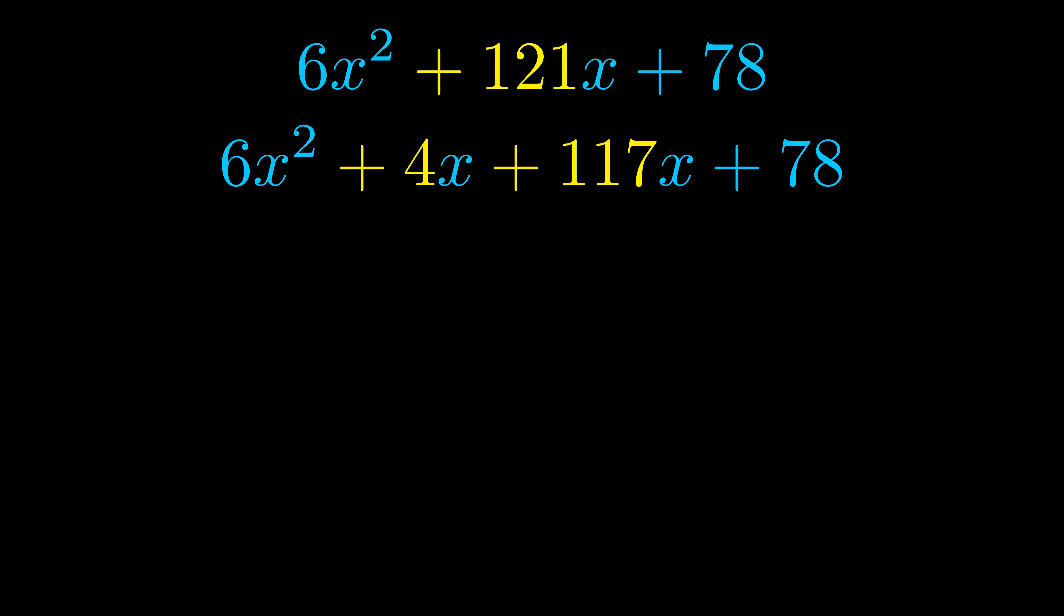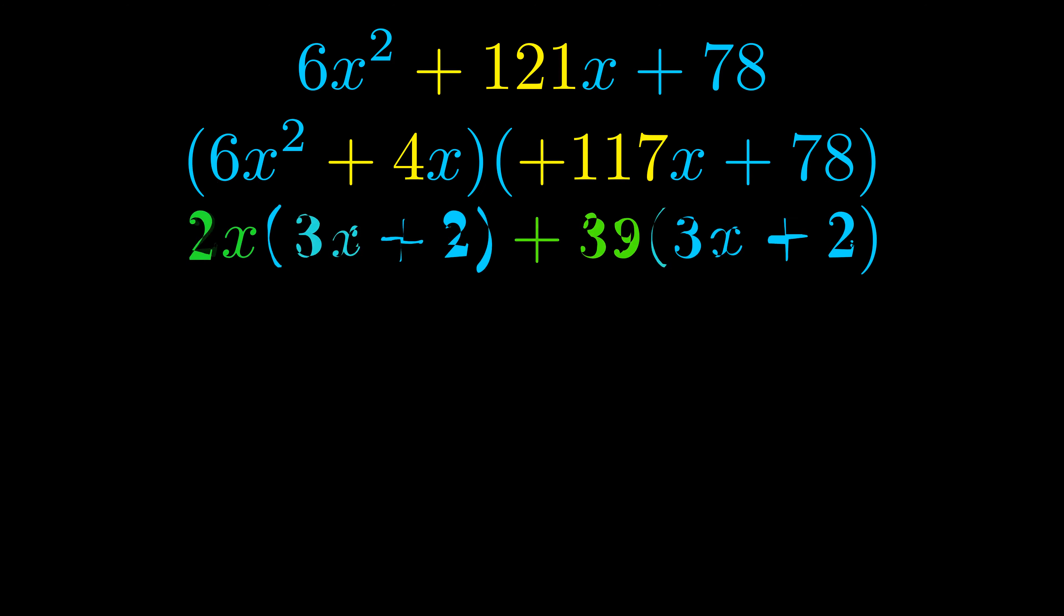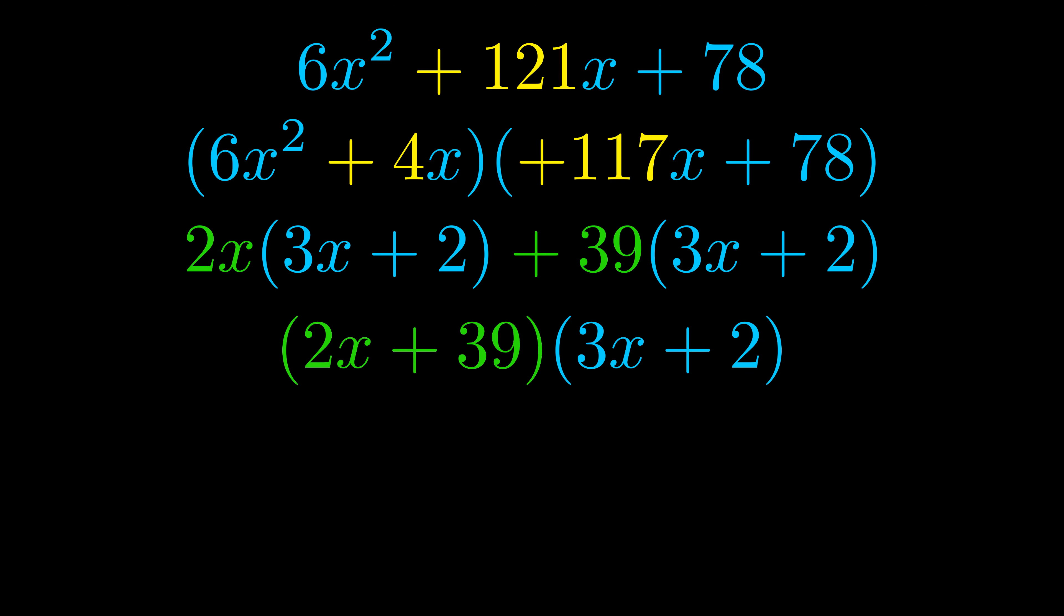Once we've done this we go ahead and put parentheses around the first term and the last term, and we do that so that we can take the greatest common factor out of both terms. We can see the greatest common factor is now outside in green. Notice also how what remains inside of the parentheses is the same in both cases. The blue values are the same. Those blue values will become one of our factors and we will combine the two green values, the GCFs that we pulled out, to get the other one. And that is our fully factored equation.